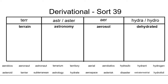Hello friends, today we are working on derivational sort number 39. This sort deals with one Latin root, ter, and three Greek roots: aster, air, and hydra or hydro.